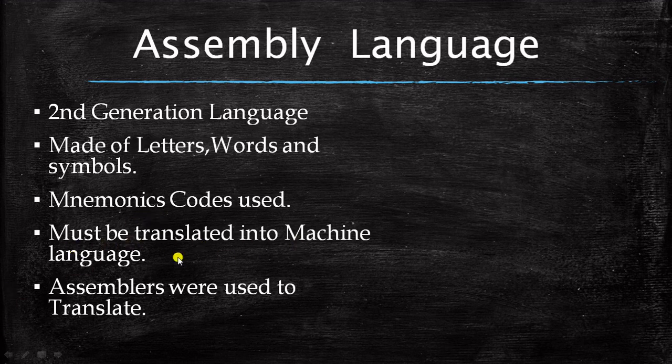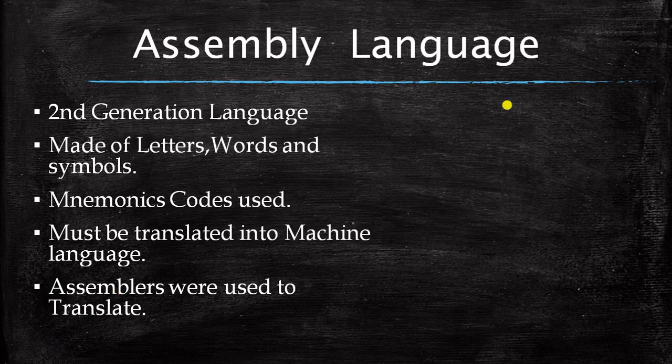It has to be translated into machine language. Because we know that computer doesn't understand any other language. Not high level, not any other language. It understands only 0 and 1. So if you are using any high level language other than machine language, that particular language has to be converted into machine language. And for assembly language who helps it? Assembler. Assembler helps to translate the assembly language into machine language. So let's see some examples.